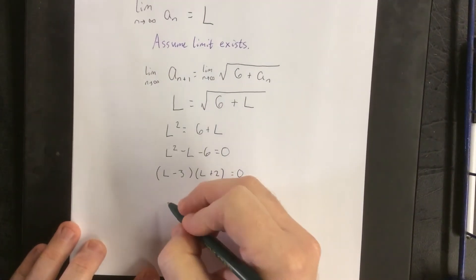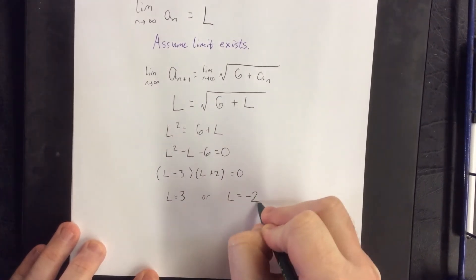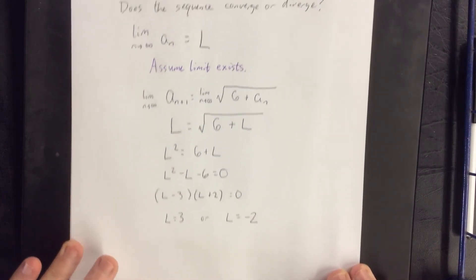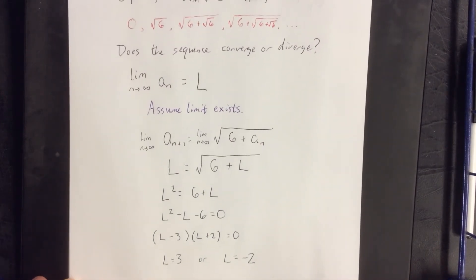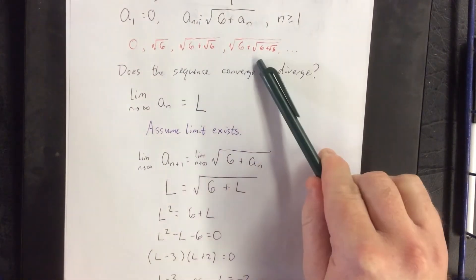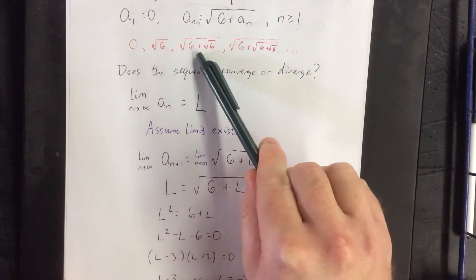This lets us know that one of two things is possible: either L is equal to 3 or L is equal to negative 2. Now with that in mind, if we take a look back at the original problem, every single term of the sequence was positive. Not only was it positive but they were all increasing from values that were slightly under 3.